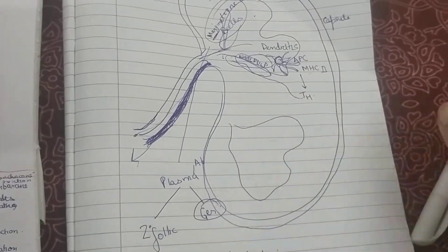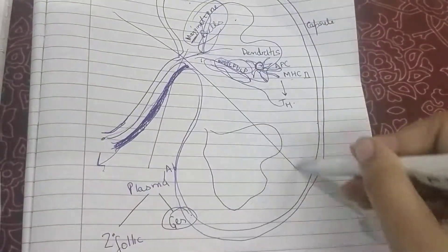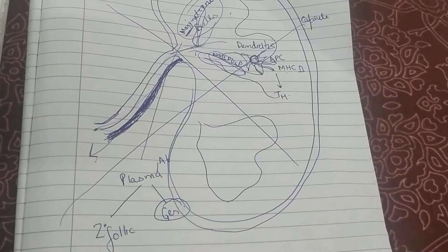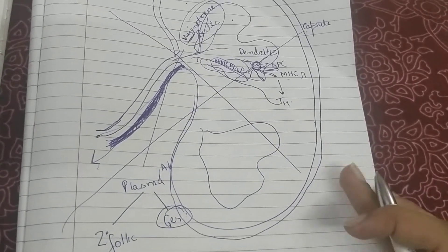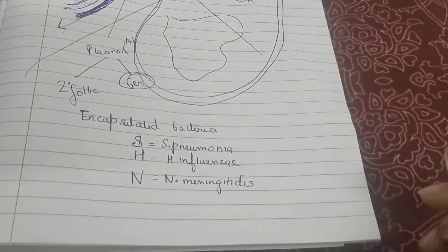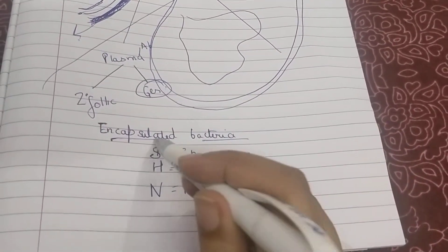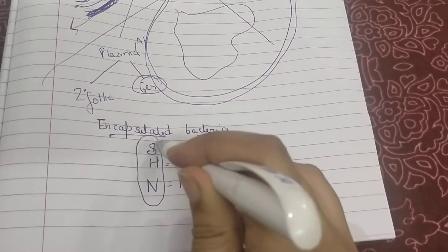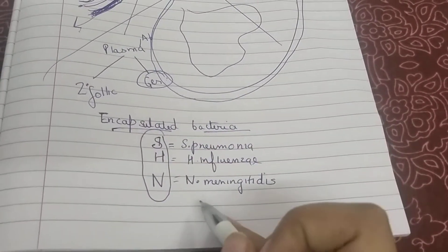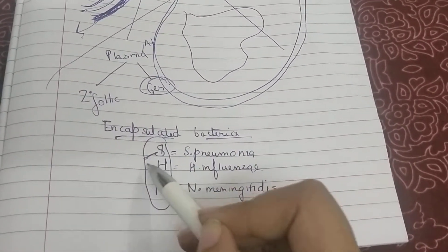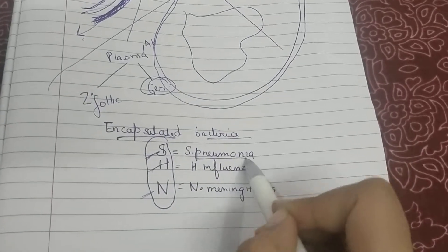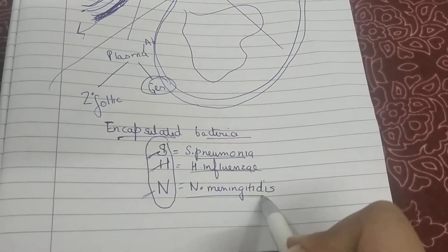But if a patient is asplenic—without any spleen—then there will be risk of increased infection, mainly by encapsulated bacteria. The main encapsulated bacteria to remember is SHINE: Streptococcus pneumoniae, H. influenzae, and N. meningitis.